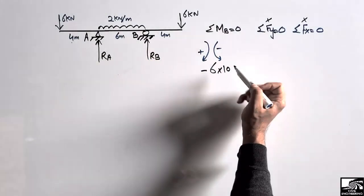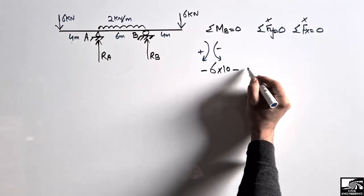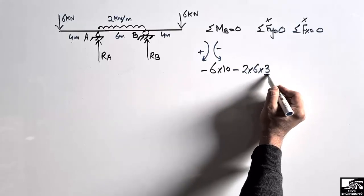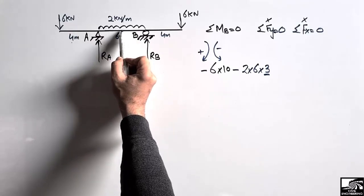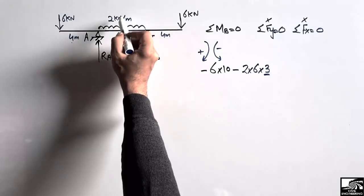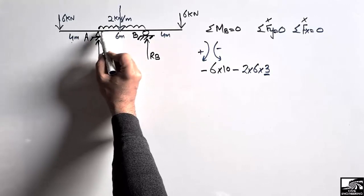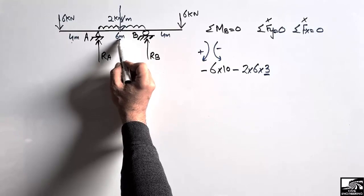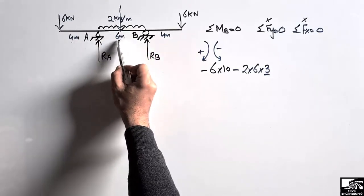The distributed load of 2 kilonewton per meter over 6 meters is converted to a concentrated load acting at the center of that span. So the moment arm from B is 3 meters, giving minus 2 times 6 times 3. The reaction RA acts upward creating a clockwise moment of RA times 6 meters.